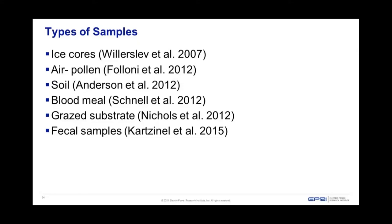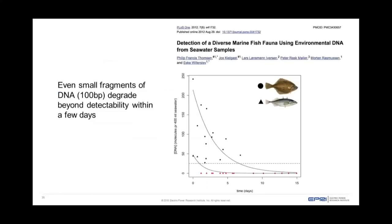We target small fragments of DNA — typically 100 to 150 base pairs — because even these small fragments degrade beyond detectability within a few days, particularly in aquatic habitats like seawater. This means you can say relatively recently that that organism was in that particular habitat. DNA persistence works very differently in soil and other sample types compared to aquatic environments.